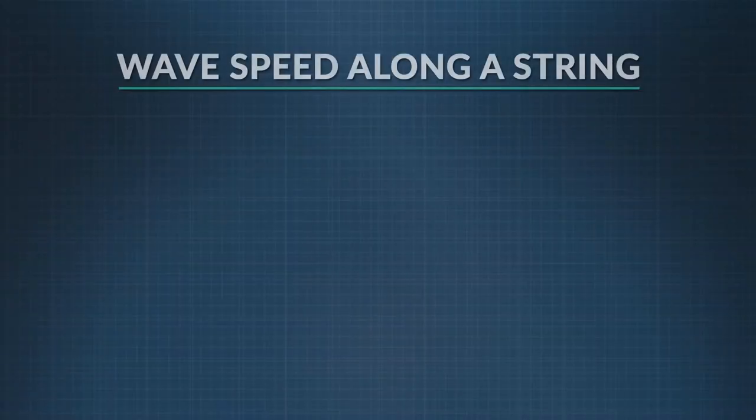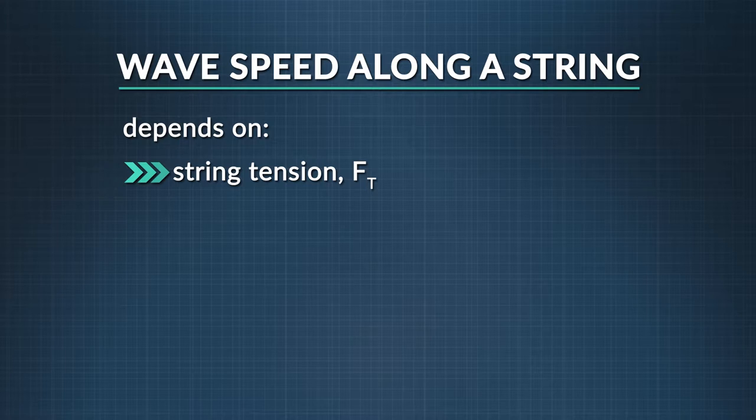So the wave speed along the string depends upon the tension of the string and characteristics of the string, called the string density or mu. Mu equals the mass per unit length of the string.